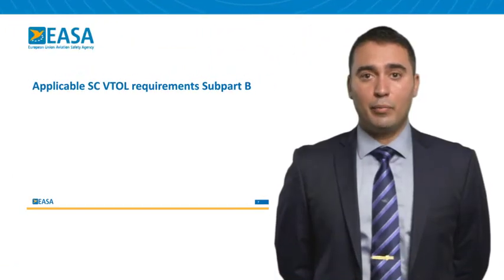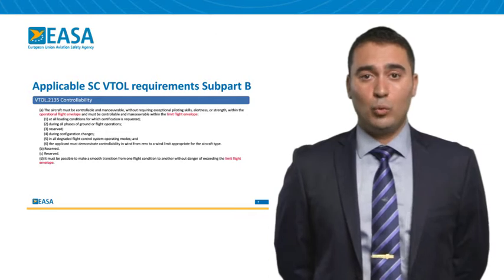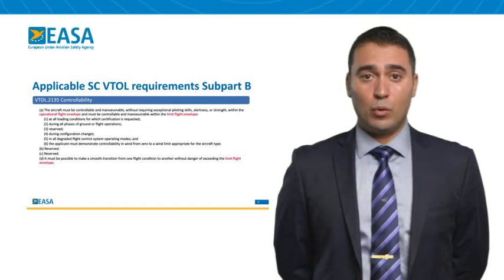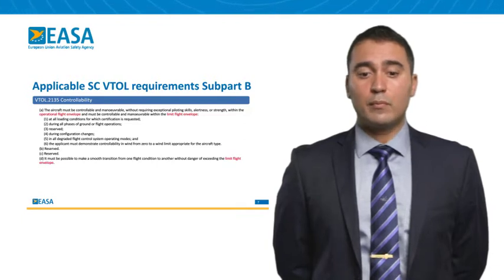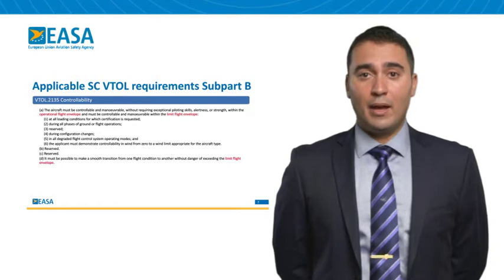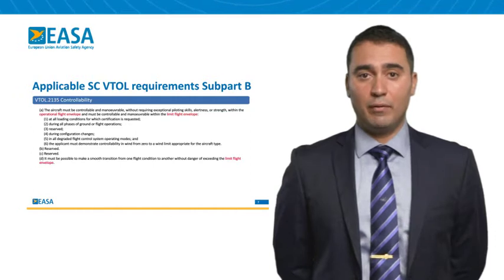Again in subpart Bravo, the controllability requirement 2135 specifies different controllability and handling quality requirements depending on whether we are in the operational or in the limit flight envelope. Requirement point delta also references the limit flight envelope, stating that we need to be able to make a smooth transition from one flight condition to another without putting in danger or exceeding the limit flight envelope.